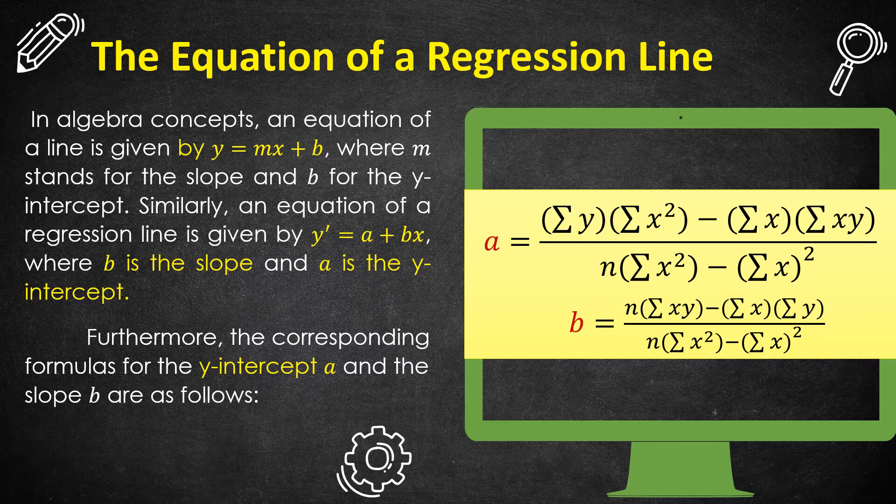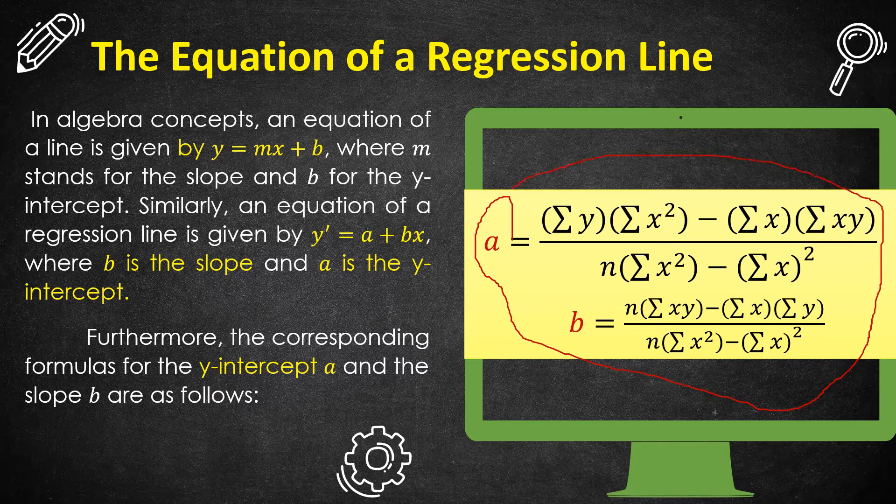The equation of a regression line: going back to our algebra concept, an equation of line is given by y = mx + b where m stands for the slope and b for the y-intercept. Similarly, an equation of a regression line is y₁ = a + bx, where b is the slope and a is the y-intercept. The corresponding formulas for the y-intercept and the slope are as follows.